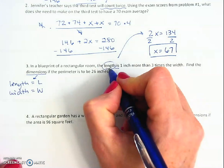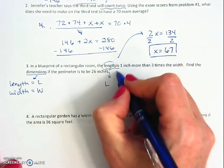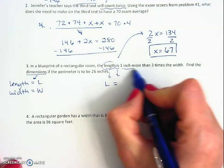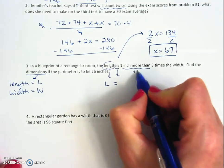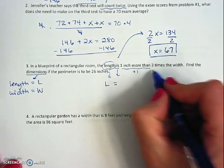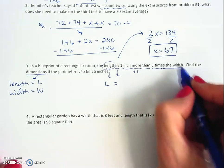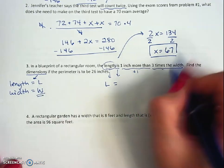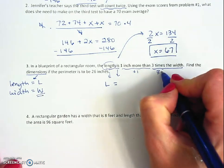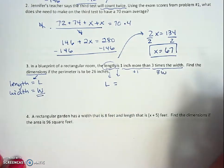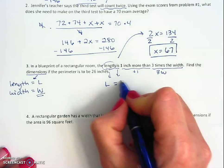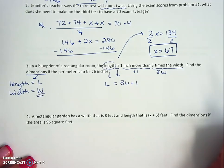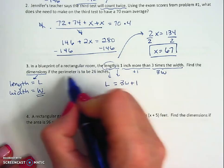I'm going to say the length, which is l, equals one more than, which means I'm going to have to add one to something, three times the width. So I said that the width was w over here, right? So I'm going to say that that is three times w, so I'll write that as 3w plus 1. The length equals that.